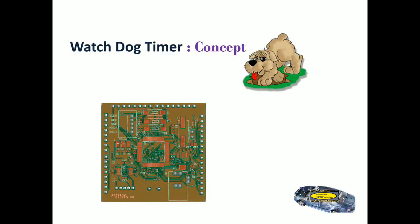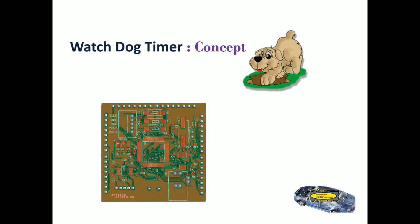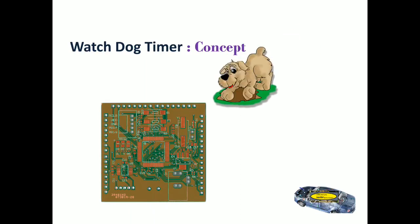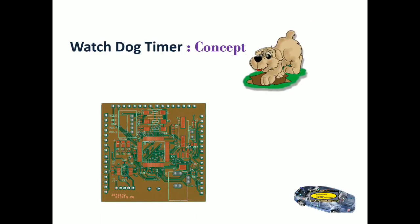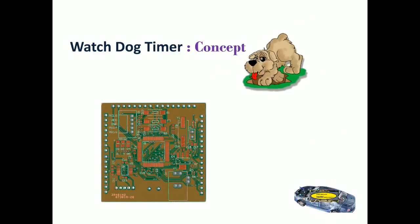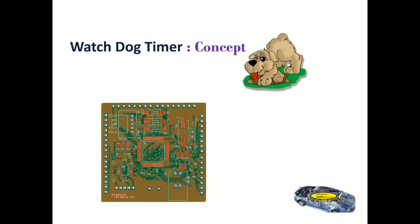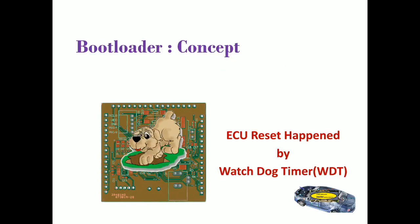When the ECU is working fine, the watchdog is doing its work but not disturbing the ECU. But as soon as the ECU halts or hangs, the watchdog will jump into the circuit and reset the ECU. Once the ECU starts from the beginning, the watchdog timer will go back to its original position, maintaining distance from the ECU, and the same process continues.